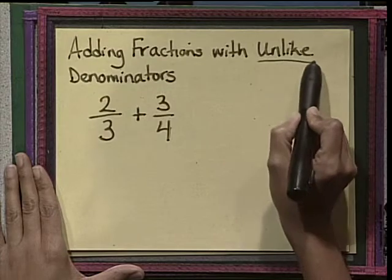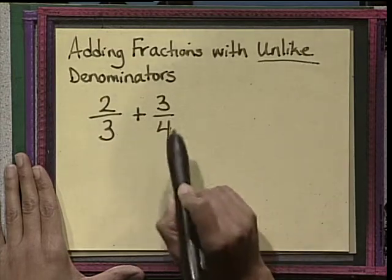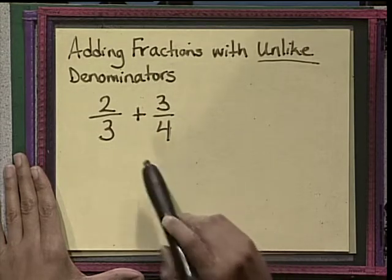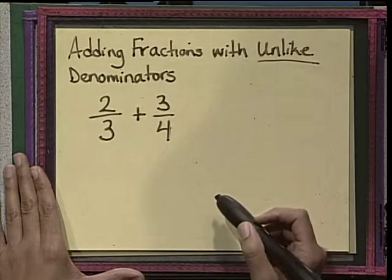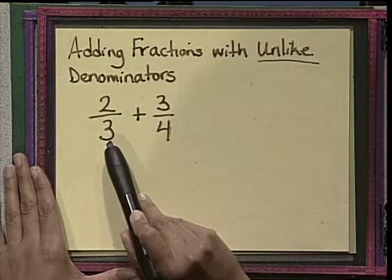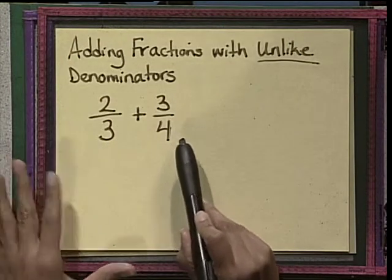So I'm going to go ahead and underline this. Unlike means that they are not the same. There is no way to add these two fractions unless the denominators happen to be the same. In order to do that we need to either change the 3 or the 4 or both.